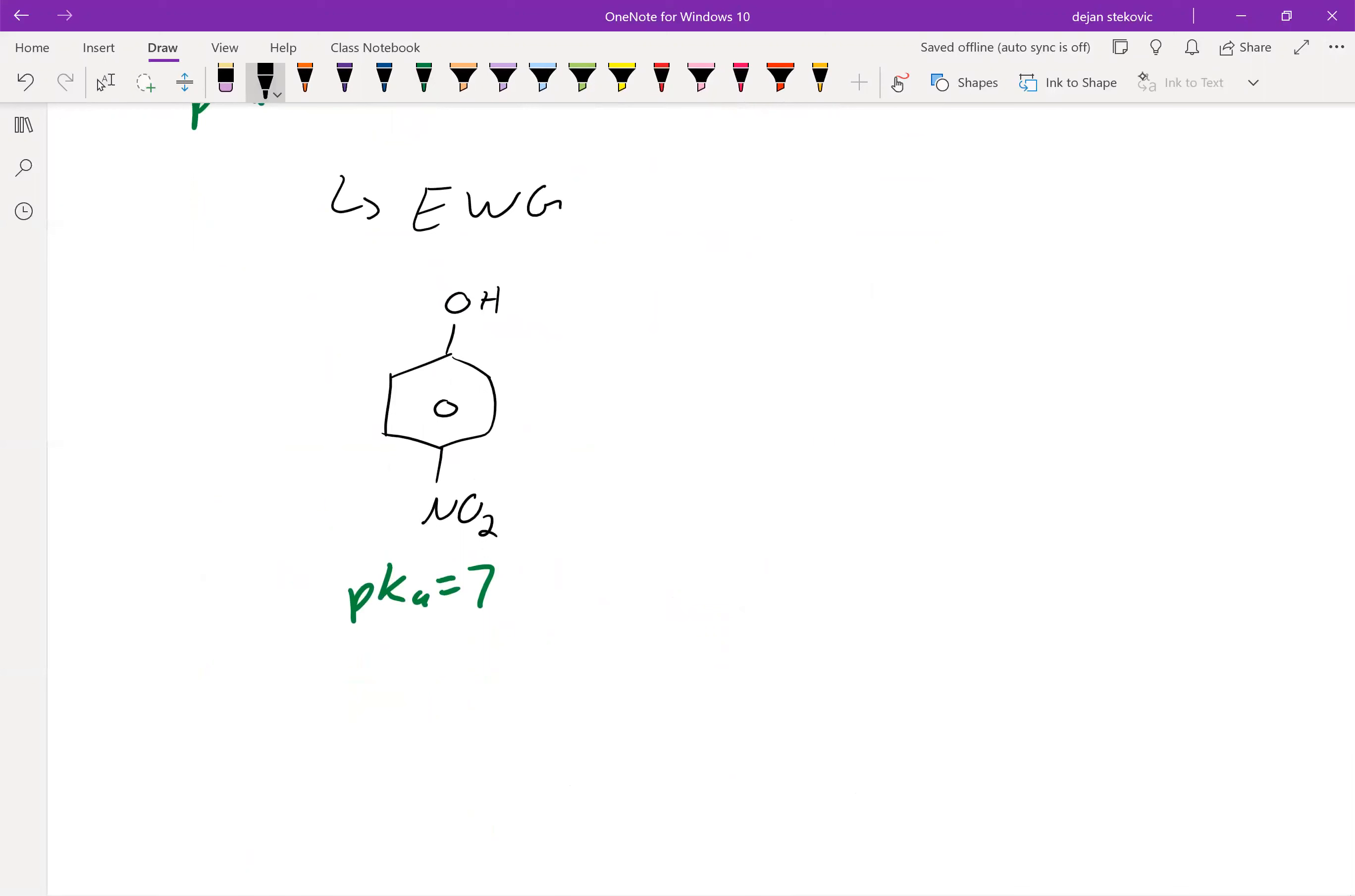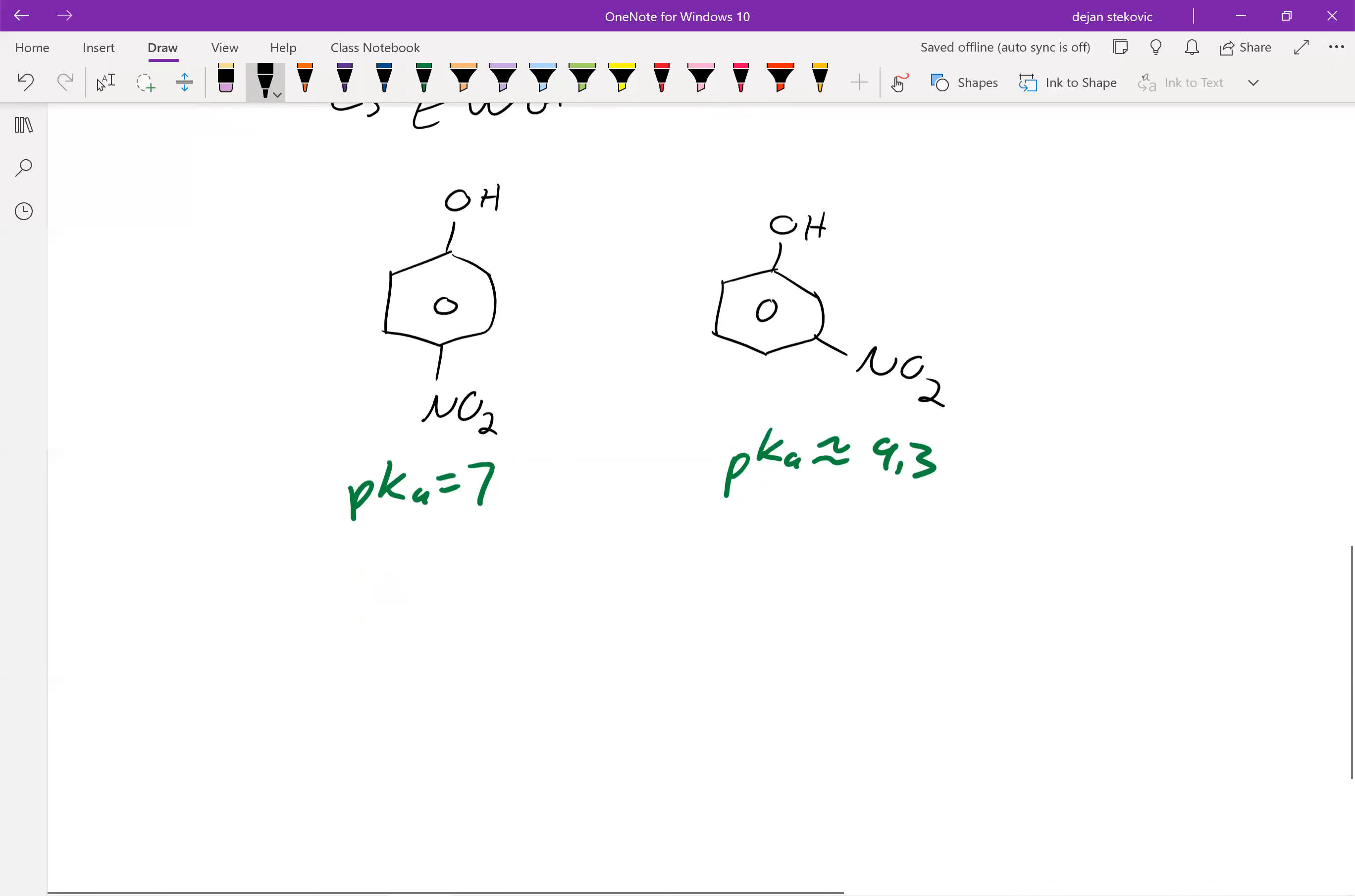And of course, the placement of the electron withdrawing group is important, as we saw in the previous chapter. So if you have this nitro group in the meta position, then your pKa is only about 9.3. So you can explore why in the work-along, but it should be pretty obvious.